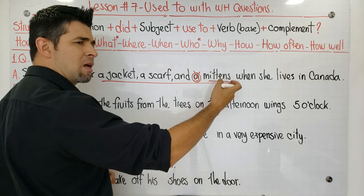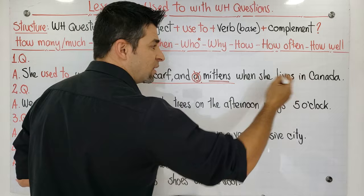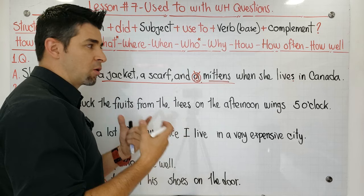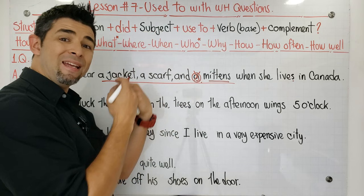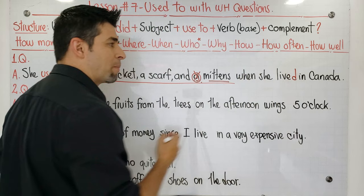Now let's look at 'when she lives in Canada.' The verb 'lives' is in the simple present, but when we are using 'used to,' it means something happened in the past and is not happening anymore. So it's not possible to use the simple present here — I have to use simple past: 'she lived in Canada.' Those are the two mistakes we found in sentence number one.